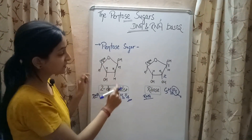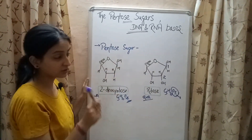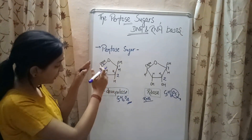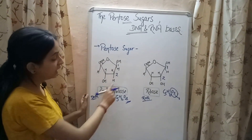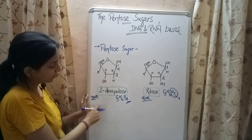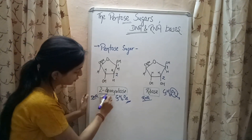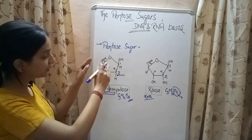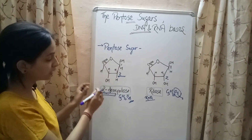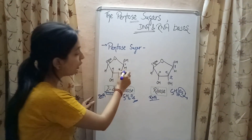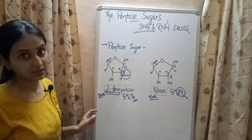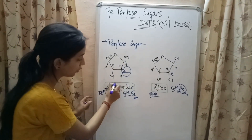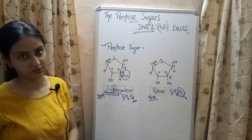Due to the absence of this additional oxygen atom at the second carbon atom of the pentose sugar of the DNA molecule, the pentose sugar of DNA is named 2-deoxy, which means that at the second position of the pentose ring of the sugar molecule present in DNA, the oxygen atom is absent — and hence the name 2-deoxyribose, where 'deoxy' stands for absence of oxygen.